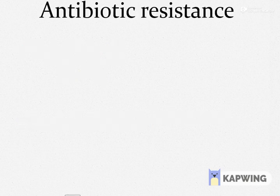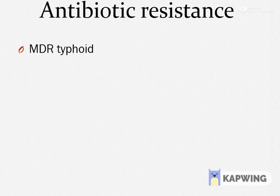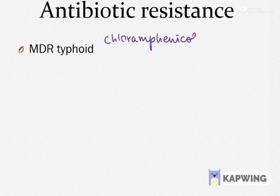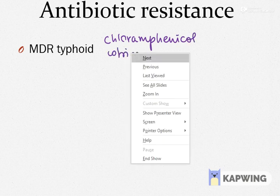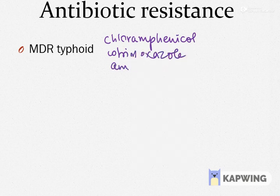Coming to antibiotic resistance in Salmonella typhi infection — the initial antibiotic used in typhoid fever was chloramphenicol, to which the bacteria became resistant within a few years. Then cotrimoxazole and ampicillin were tried, but at present most of the bacteria are MDR typhoid, meaning they are resistant to the usual first-line agents: chloramphenicol, cotrimoxazole, and ampicillin.